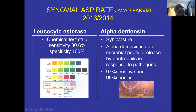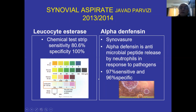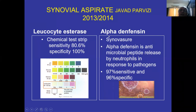Alpha-defensin is much more reliable than the leukocyte esterase test. It is called Synovasure and is available in the country. Alpha-defensin is an antimicrobial peptide released by the neutrophils due to the action of pathogens, responsible to pathogens. It is something like 97% sensitive and 97% specific — very important. The peptides are picked up by Synovasure; they are nothing but the reaction by the organisms towards the neutrophils.